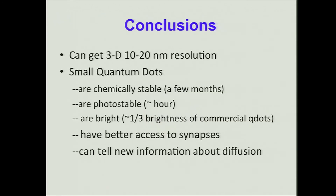In conclusion, we can get three-dimensional fluorescence imaging with 10 to 20 nanometer resolution using small quantum dots that are chemically stable for a few months, photostable on the order of an hour, and bright — about a third of the brightness of commercial quantum dots. They have better access to the synapse, and you can obtain new information about the diffusion of AMPA receptors. Thanks very much.